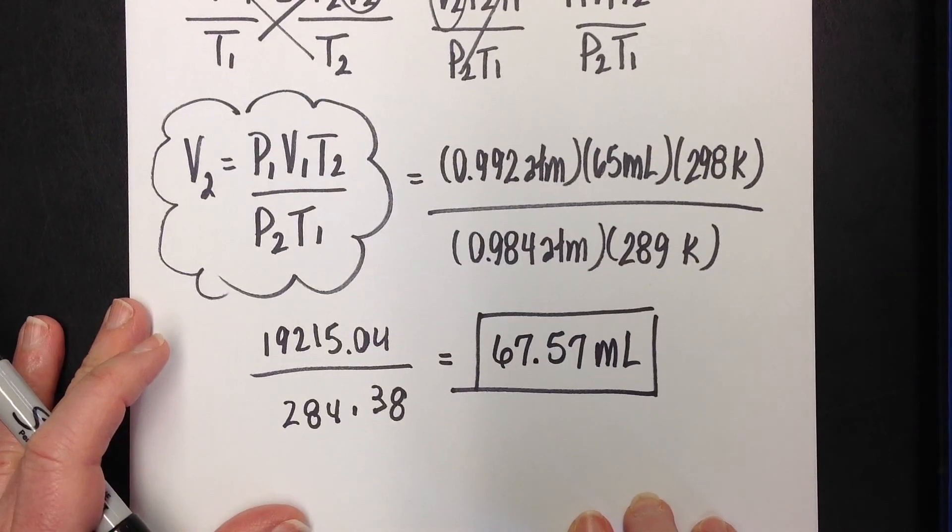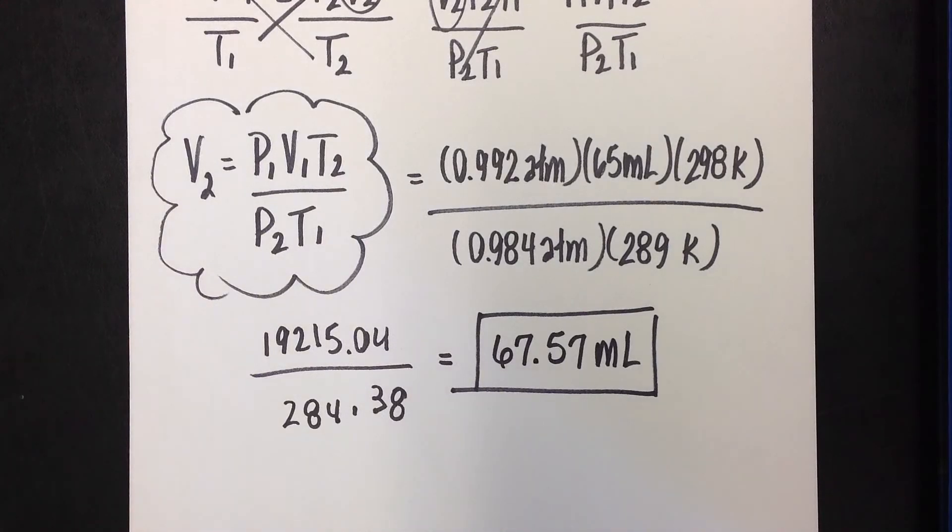That's how we do a combined gas law formula. So now you've seen Boyle's law - just pressure and volume. You have seen Charles' law, which is just temperature and volume. You saw Gay-Lussac, which was temperature and pressure. And now you have seen the combined gas law, which is everything put together. The next law we'll go over is a little bit different, and that's going to be called the ideal gas law. So that will be the next video that I post. I would definitely encourage you to make sure you've done the first four basics before you try the ideal.